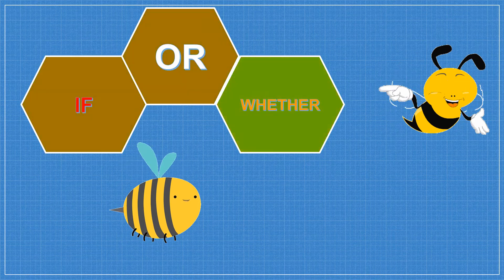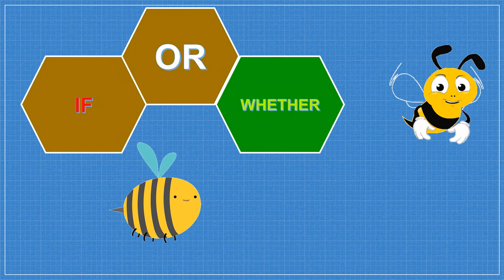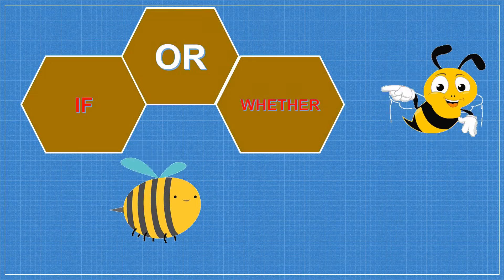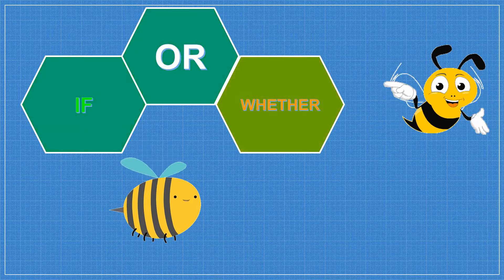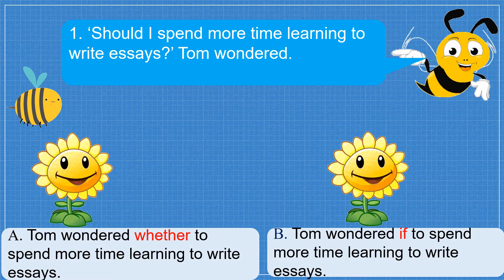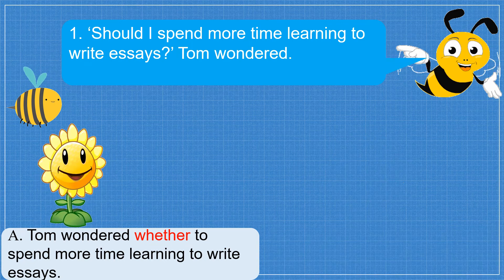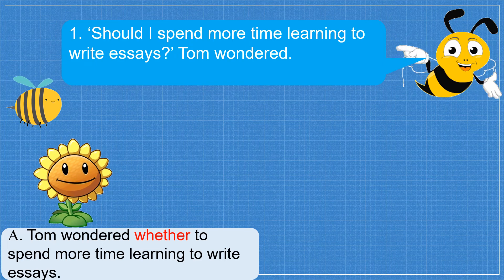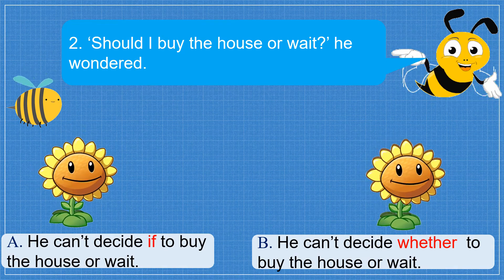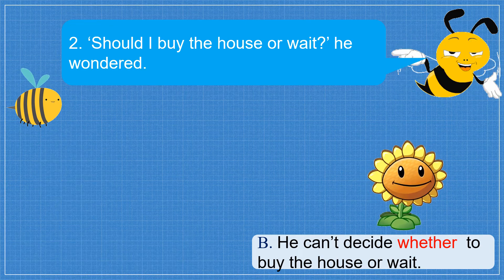Let's play an easy game — 'if' or 'whether'? Number 1: 'Should I spend more time learning to write essays?' Tom wondered. Choose A or B. The answer is A: Tom wondered whether to spend more time learning to write essays. Number 2: 'Should I buy the house or wait?' he wondered. The answer is B: He can't decide whether to buy the house or wait.